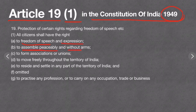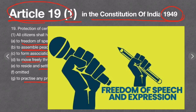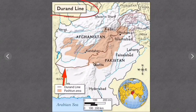Article 19 also gives freedom to form associations and unions, freedom to move and settle in any part of India, and freedom to practice any profession, occupation, trade, or business. So Article 19 gives freedom of speech, expression, and more.